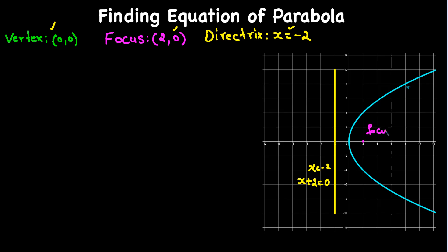To find the equation of this parabola, we are going to use a property of the parabola. Let's say there is a point P somewhere on this parabola at coordinates (x, y). We join this focus with point P and draw a perpendicular from P onto the directrix.